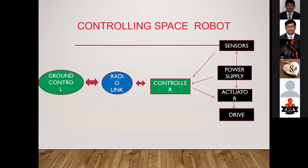These are the flowcharts of controlling space robotics, along with some important components. Sensors give information about the robot's environment to the controller, which sends information to the ground level via radio links. The ground level then gives instructions back to the controller about the environment and positions, and what actions should be taken, sending signals to the drive to take action.